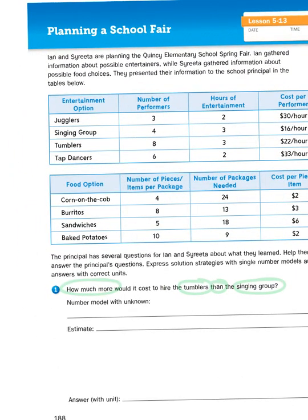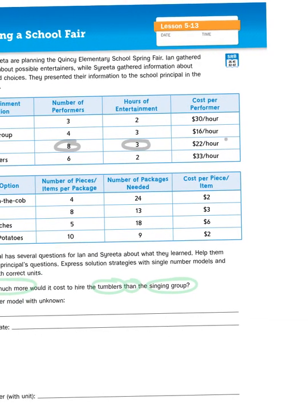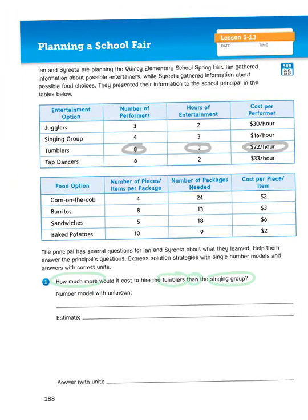There are eight tumblers in the group, and they will perform for three hours, and each tumbler would be paid $22 an hour. Now that, in comparison to the singers, who have four members in their group, would perform for three hours, and they would only be paid $16 per hour.